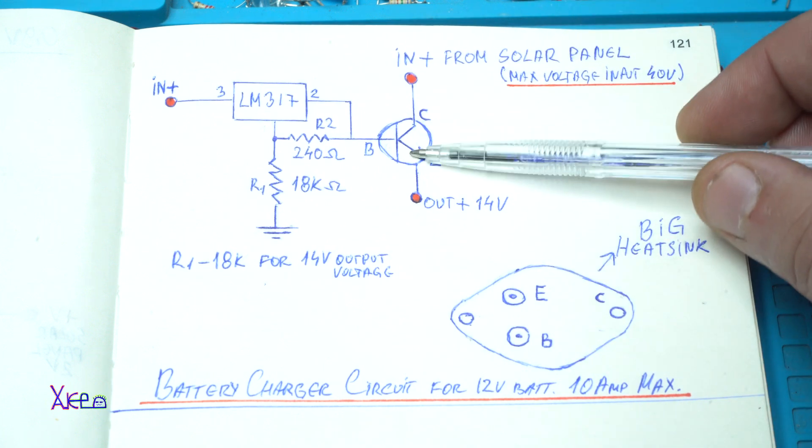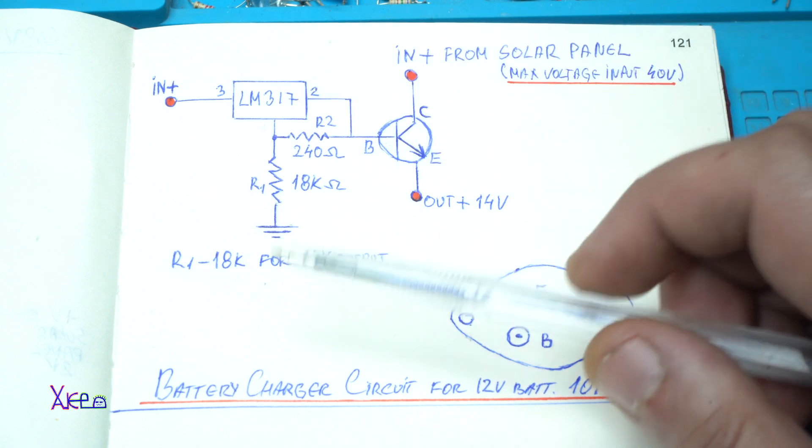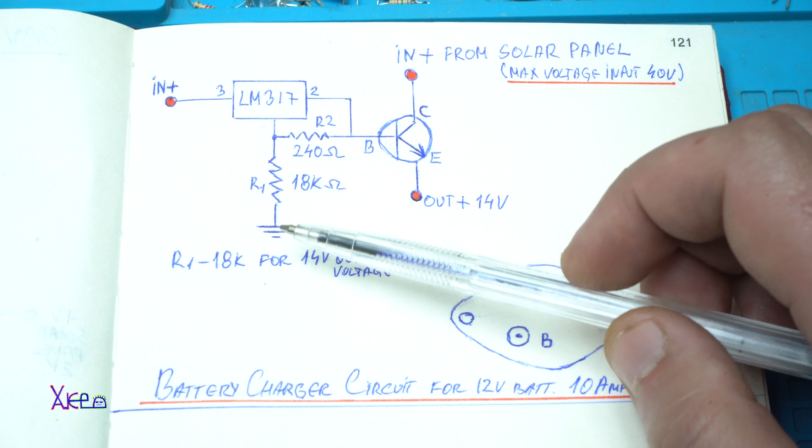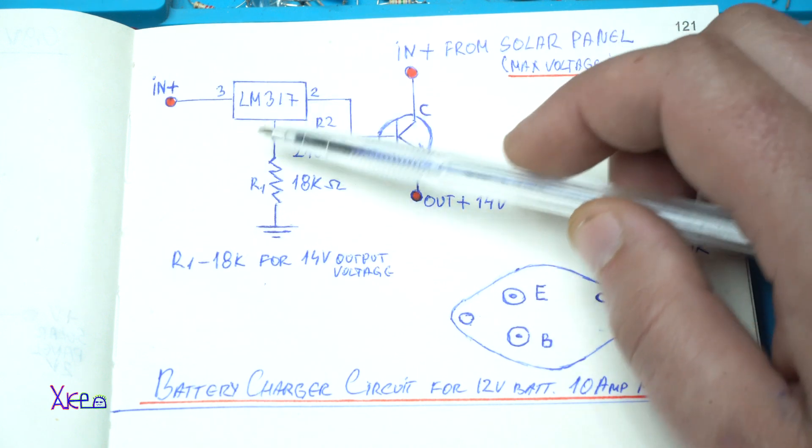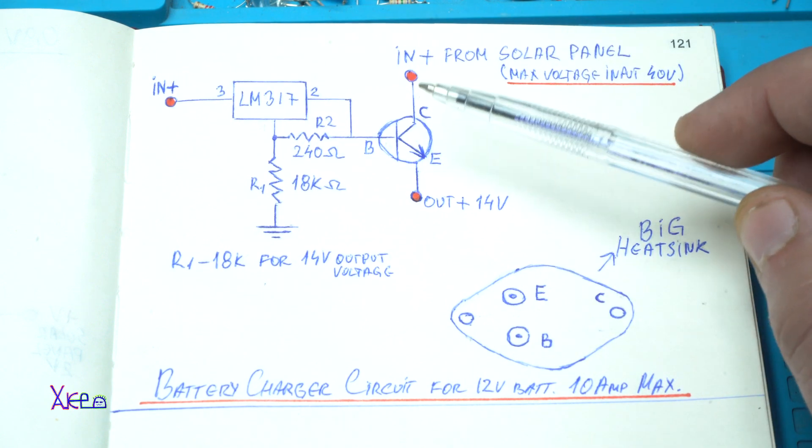But this transistor needs to be triggered with exactly 14 volts delivered from the LM317 voltage regulator. Because this voltage regulator can handle very high amperes, but the N-P-N transistor can.